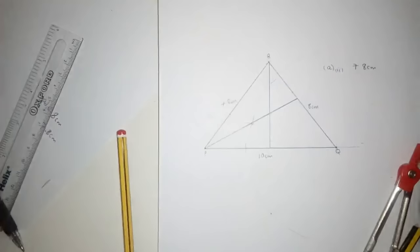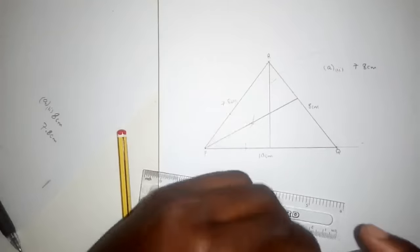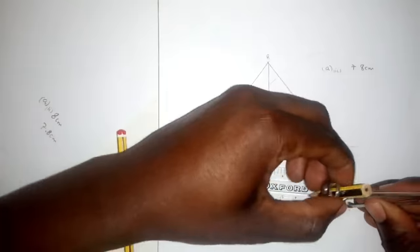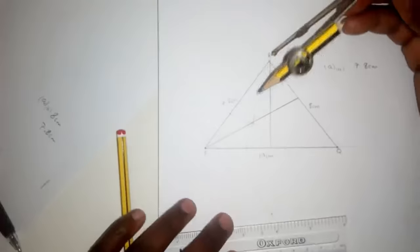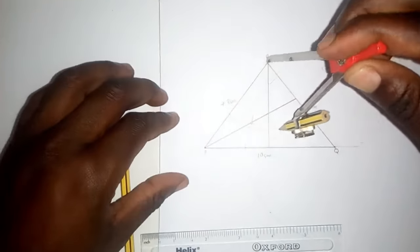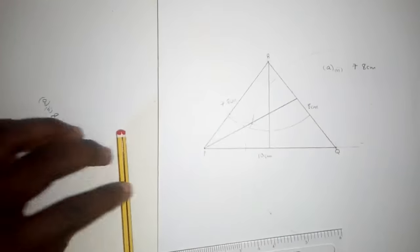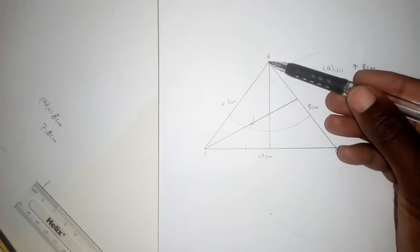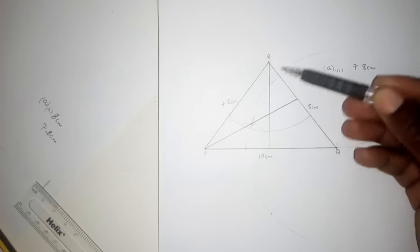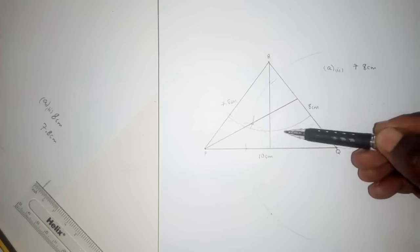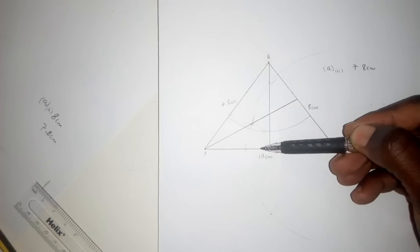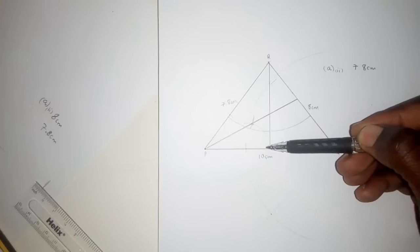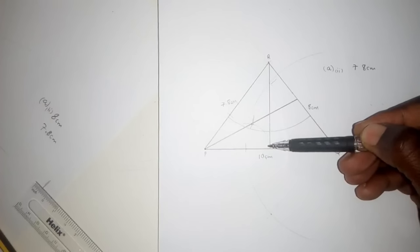The next question says 5 centimeters from R. Open your compass to 5 centimeters and go to where R is, then draw an arc. This arc represents 5 centimeters from R. Now, point T is within triangle PQR such that it is 5 centimeters from R — so it's supposed to be on this side inside the triangle.